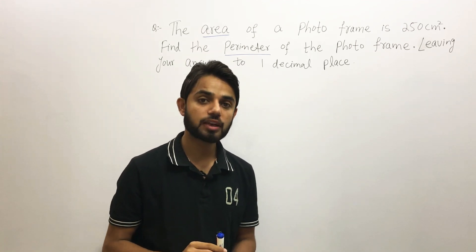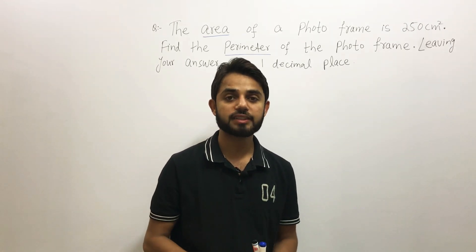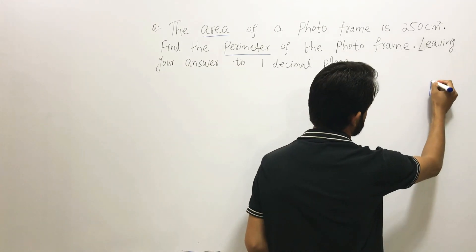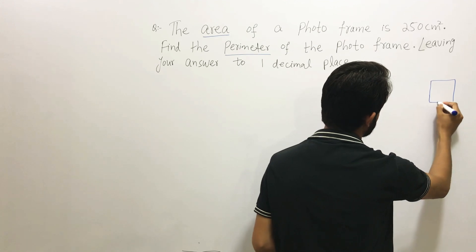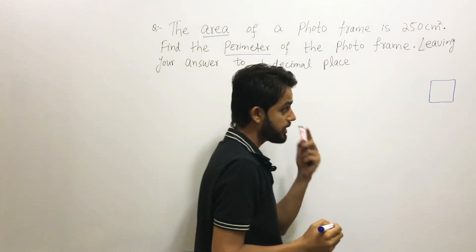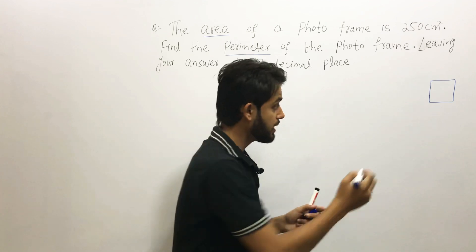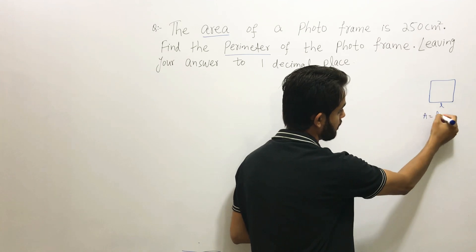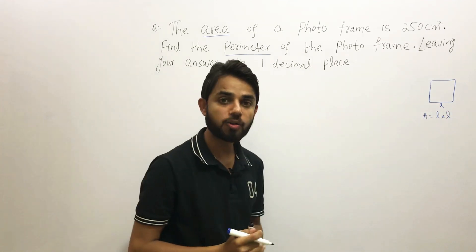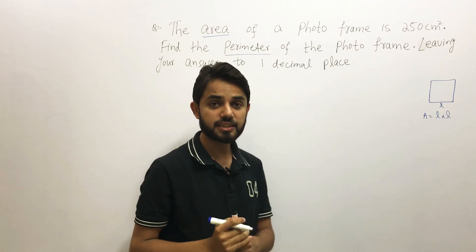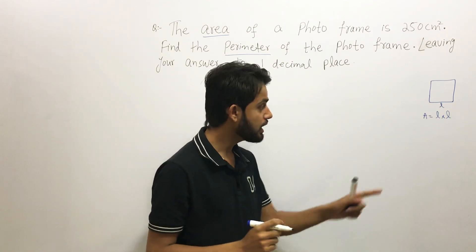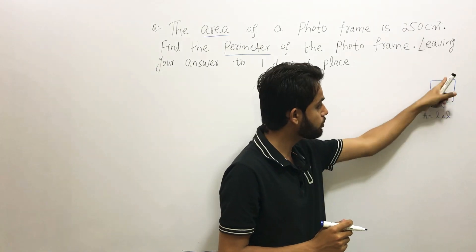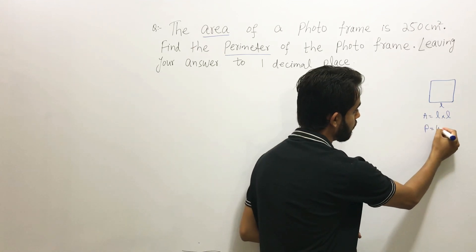Perimeter means the outer boundary, and the sum of all the sides gives you the perimeter. For example, if you have a square with side length L, the area is L multiplied by L. For the perimeter, since a square has four equal sides, the perimeter is 4L.